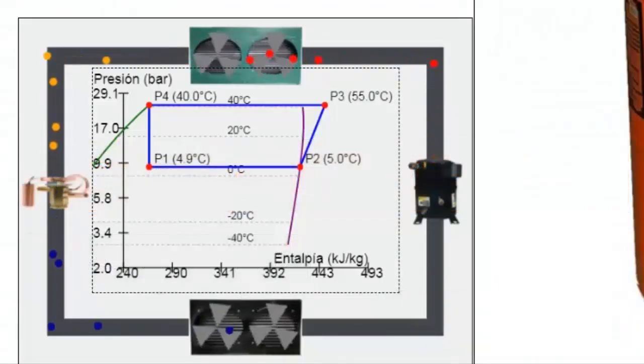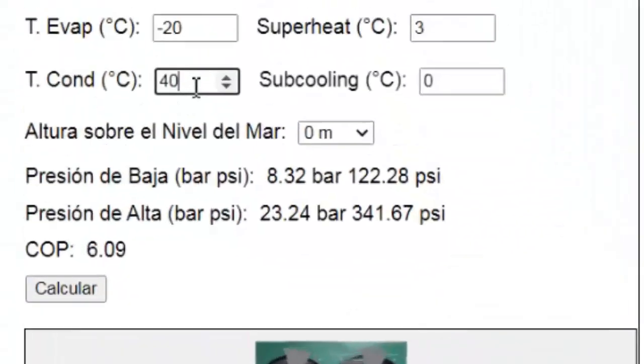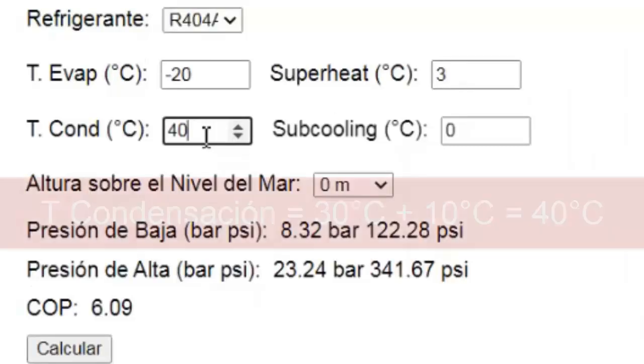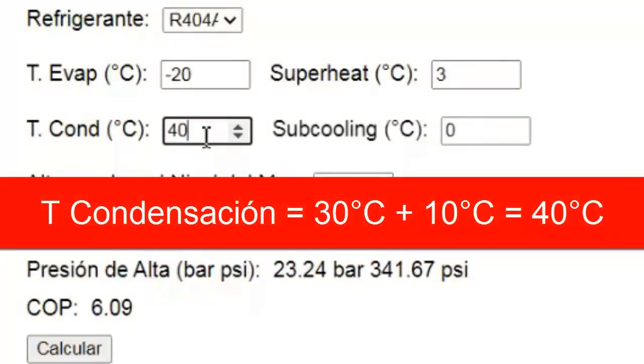To calculate the condensation temperature within the refrigeration system, we will add 10 degrees Celsius to the ambient temperature surrounding the equipment. For example, if the ambient temperature is 30 degrees Celsius, the condensation temperature will be 40 degrees Celsius.